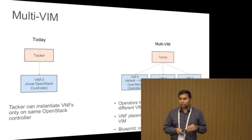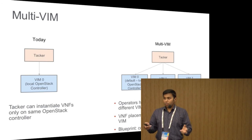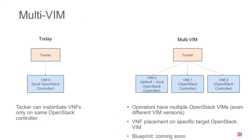On multi-VIM: today Tacker can instantiate VNFs, but it's currently geared to instantiate VNFs only on its own OpenStack installation, which doesn't cut it for operators. Based on inputs received, we want to decouple Tacker to a model where it can instantiate VNFs on any VIM, any OpenStack controller — not just its local one. There could be a default VIM0 if there is only one VIM, but that need not be the case. We are working on this and planning a blueprint effort.